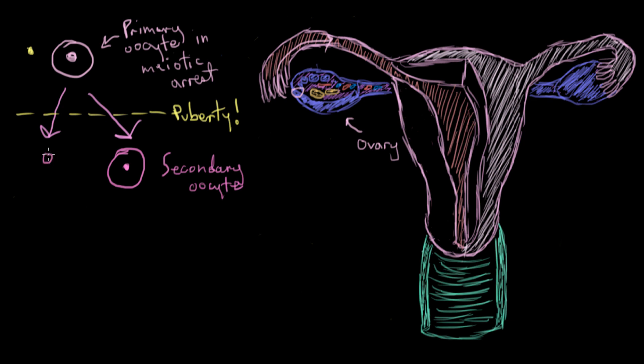So this little guy over here that didn't get much cytoplasm, it still has a full complement of chromosomes. But it still ends up being pretty small and not really very functional. So it kind of withers away and dies. And it's called a polar body. So you end up with this really large secondary oocyte, and this is what ends up getting ovulated.